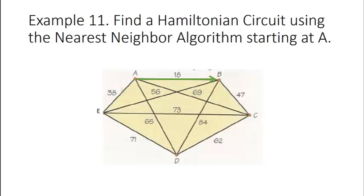Where will we go next? From B we could travel to vertex C which is 47 miles away, to vertex D which is 84 miles away, or to vertex E which is 56 miles away. So the nearest neighbor to vertex B is vertex C at 47 miles. From C we could travel to vertex D which is 62 miles away or to vertex E which is 73 miles away, so the nearest neighbor to C is vertex D.